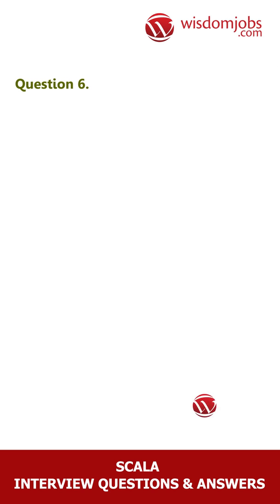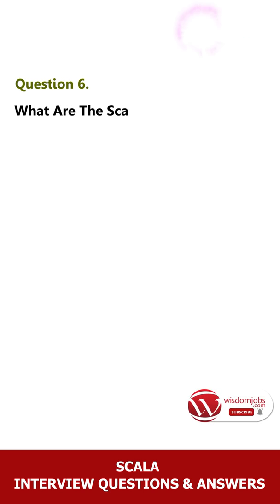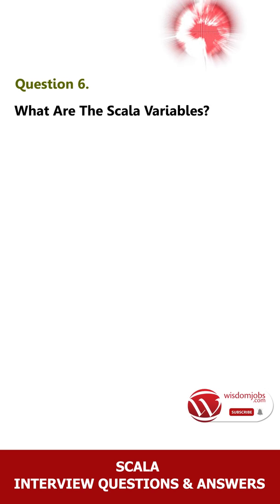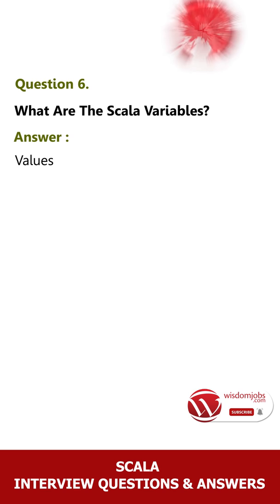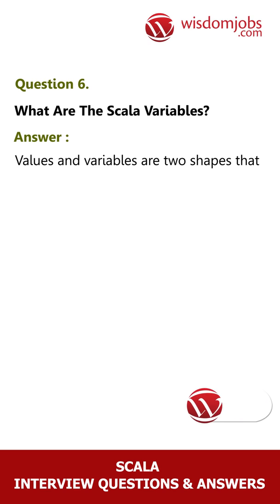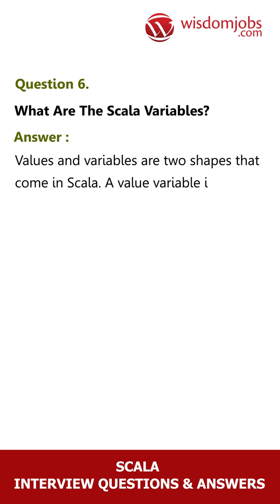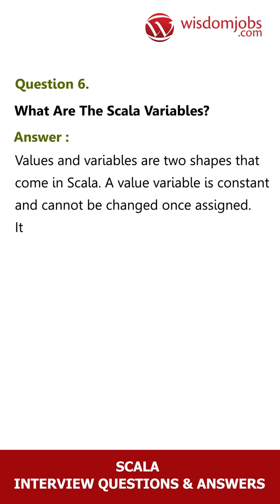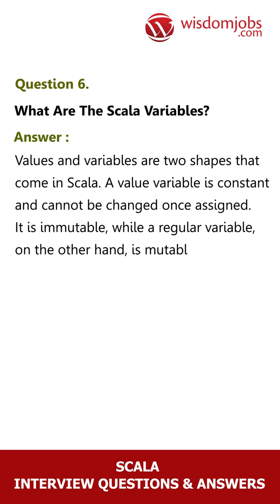Question 6: What are the Scala variables? Answer: Values and variables are two shapes that come in Scala. A value variable is constant and cannot be changed once assigned — it is immutable — while a regular variable, on the other hand, is mutable, and you can change the value.